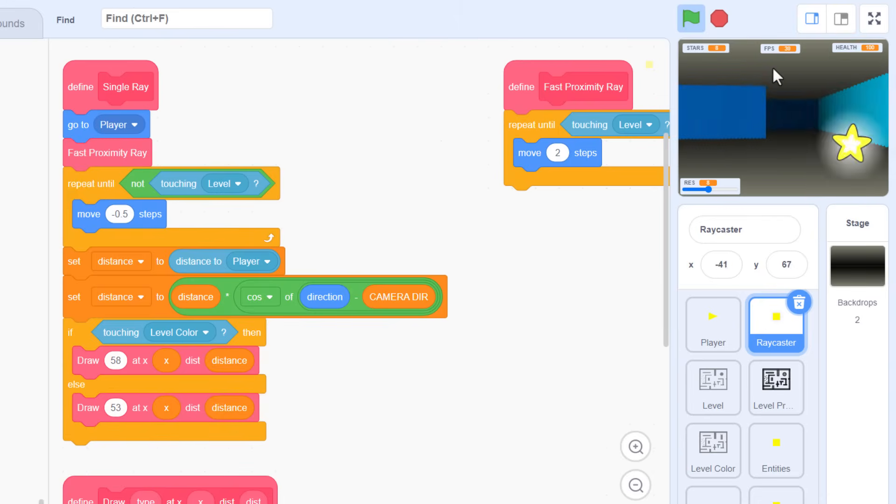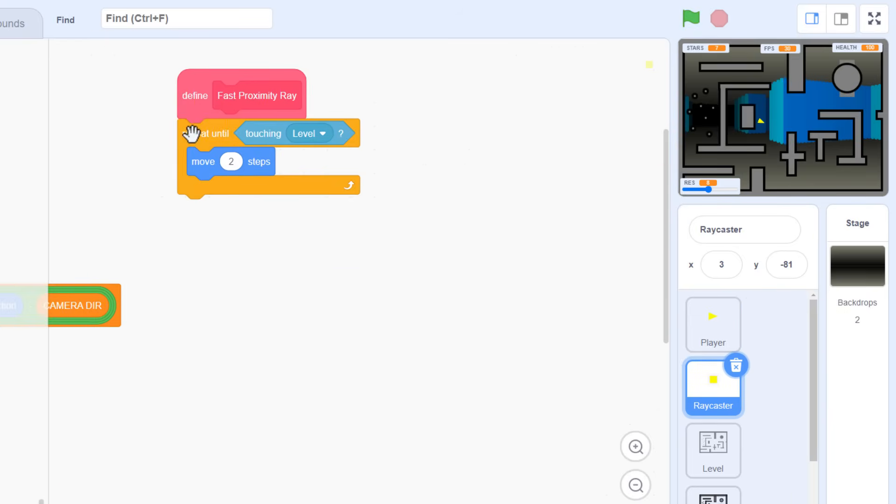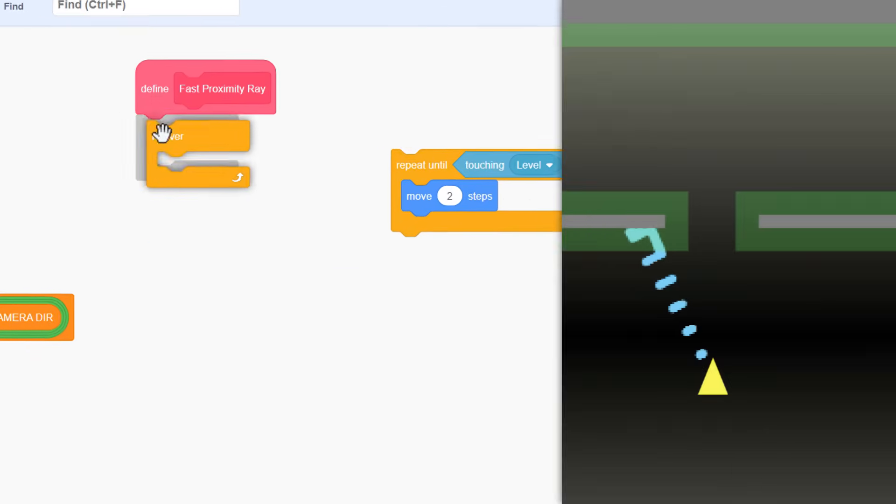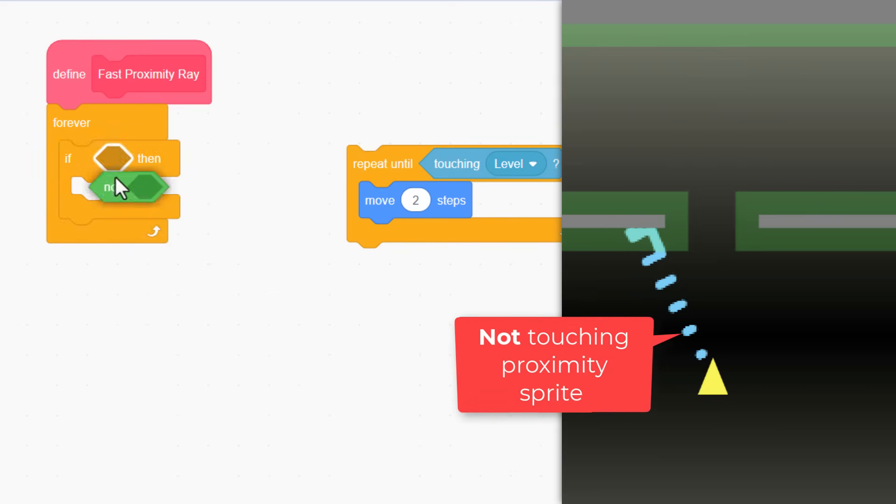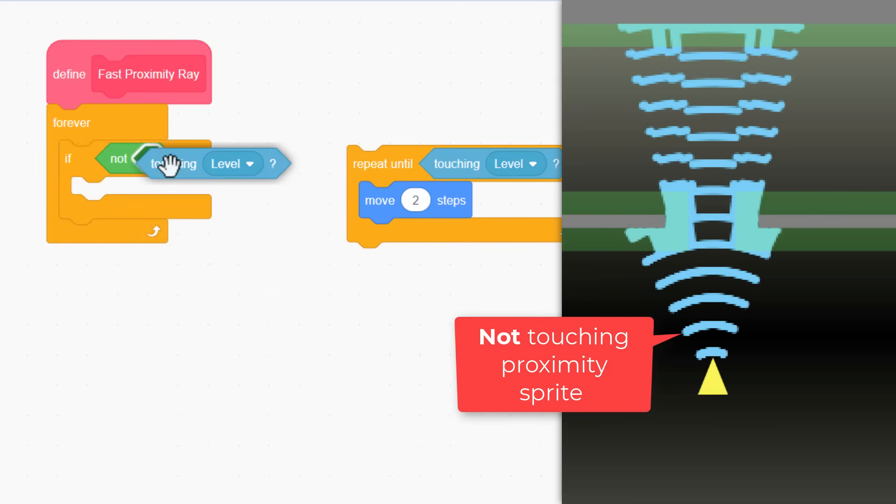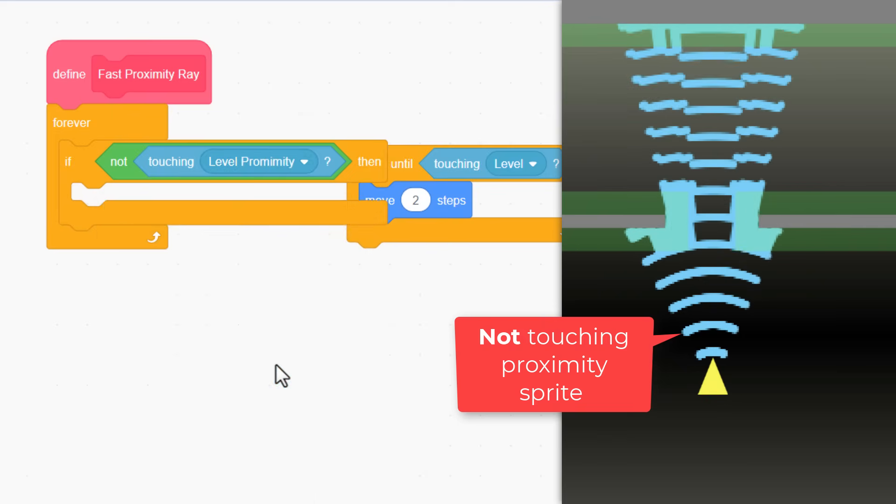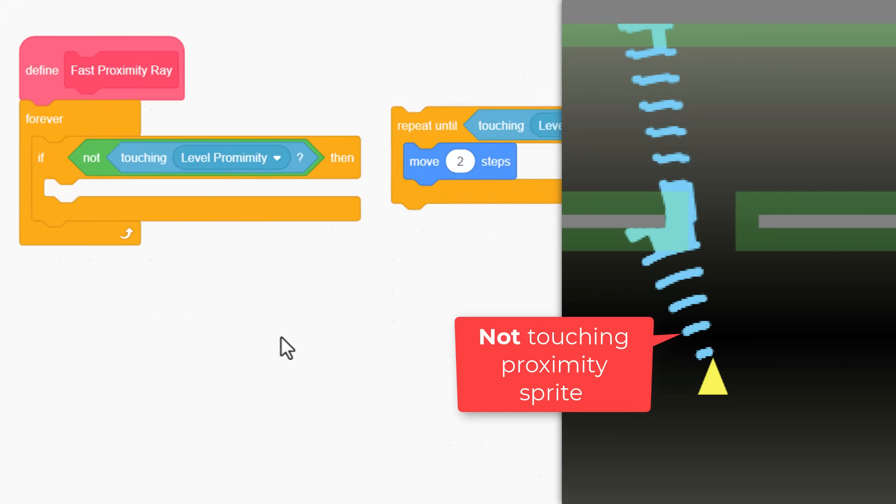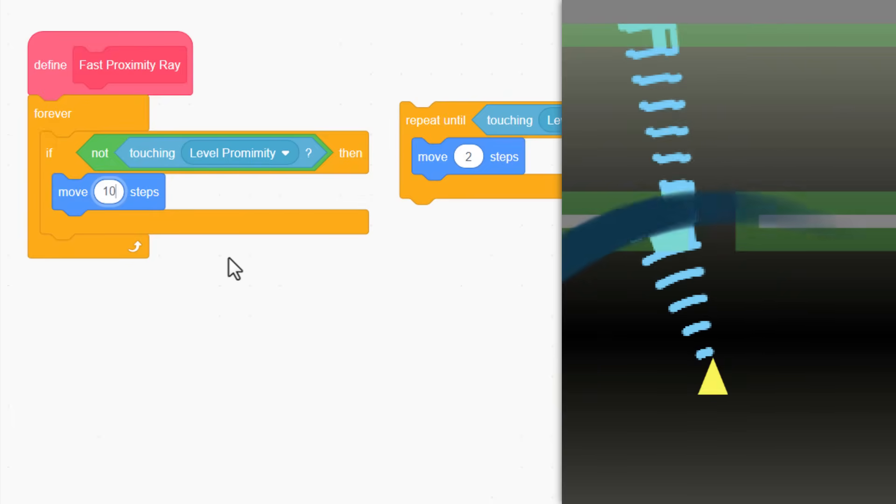Time for some real fun! To ensure we get the minimum touching checks, we'll rework this script using a forever loop. So, the logic is this. If the ray is NOT currently touching our proximity sprite, then we are safe to move forward by a full 10 pixels.